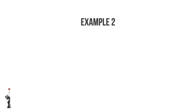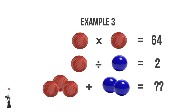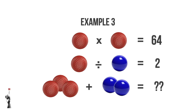Let's take a look at a third example. We have red ball multiplied by red ball to give us 64. But we don't like using the word red ball, so let us replace it with a variable. In this case, we replace it with a variable M. So now we have M multiplied by M equal to 64.